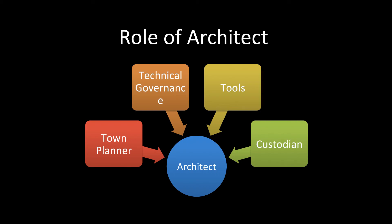Technical governance ensures that teams don't start creating a new monolith or combining multiple microservices into one huge thing. We should keep following the principles of microservices architecture so everyone gains the benefits. The architect also plays the role of custodian of the overall microservices architecture. The main points are: town planner, technical governance, recommending new tools, and custodian.